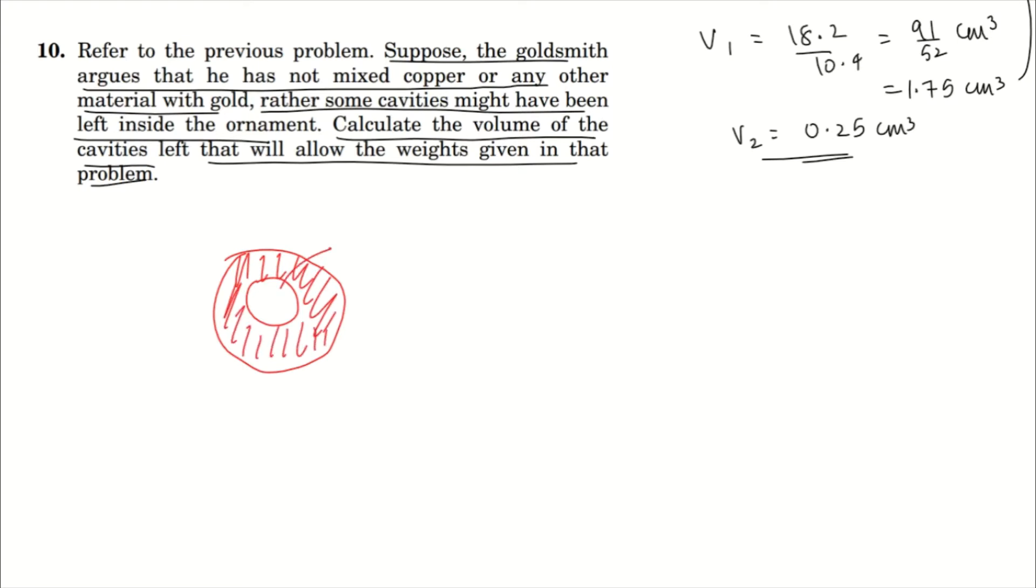If the cavity's volume we take to be V, and the actual substance, the actual gold, its volume we take to be V', then this substance has a mass of 36 grams.